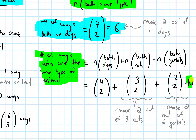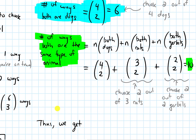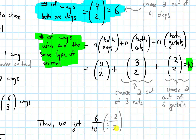So putting it all together, our answer is six over ten. We can simplify by dividing the top and bottom by two, and we get three over five. And that is our answer.